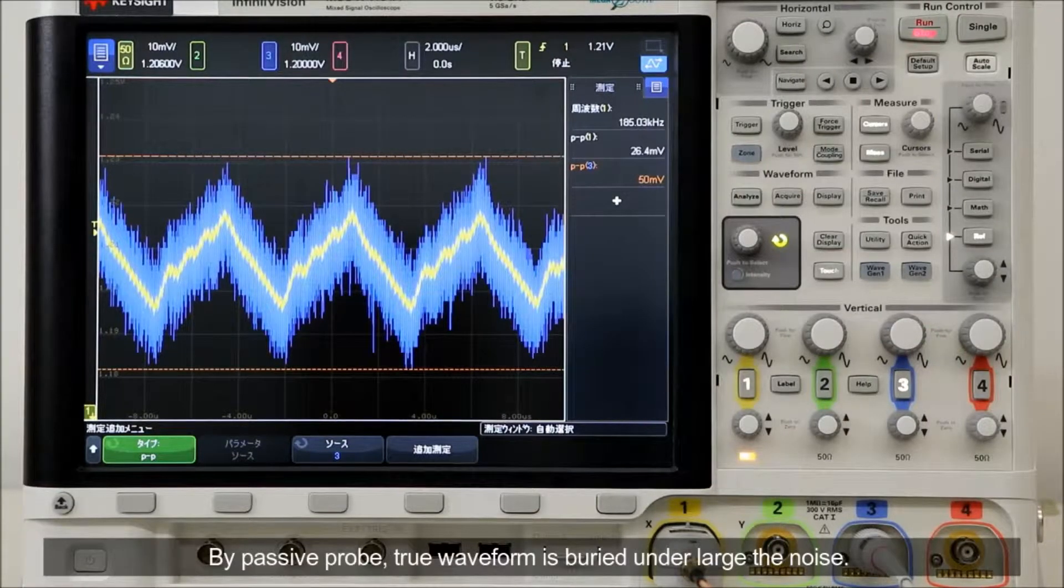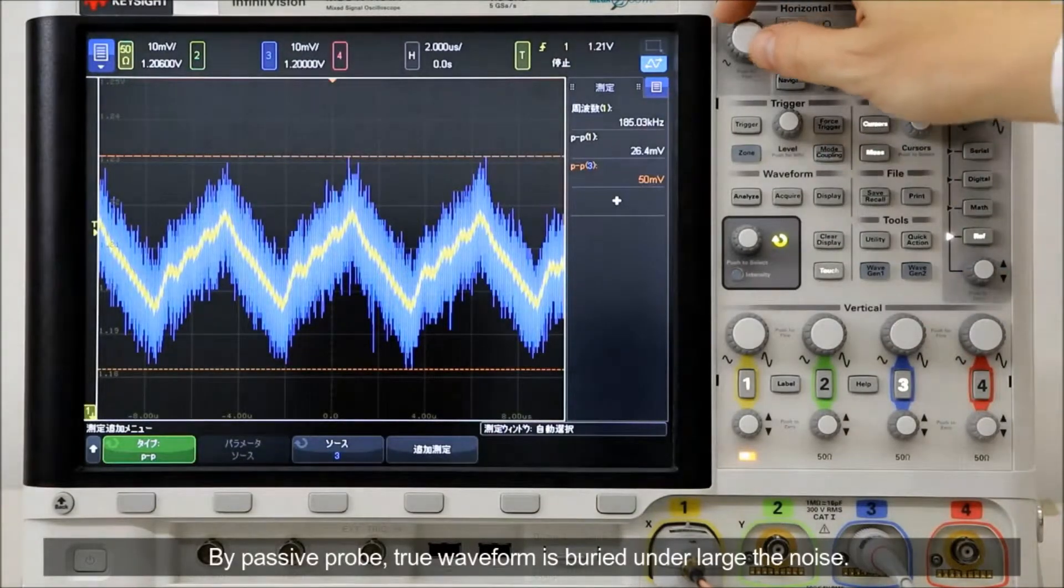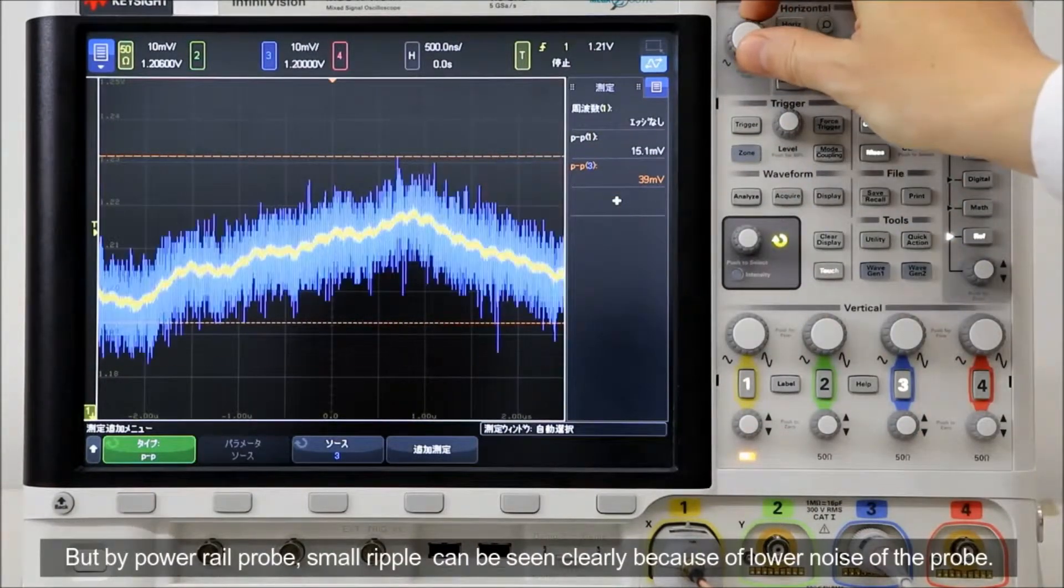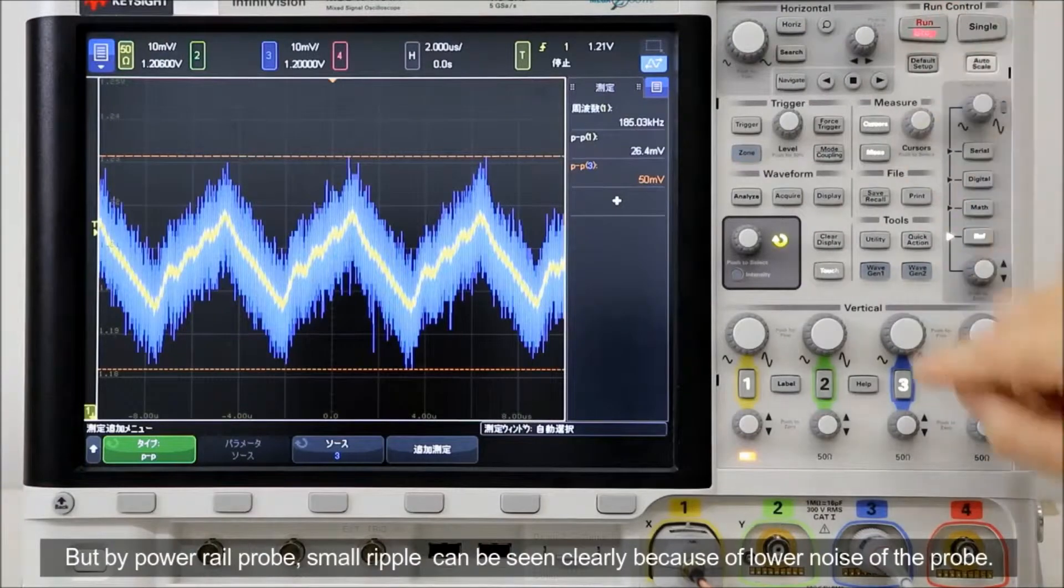By passive probe, true waveform is buried under the large noise. But by PowerRail probe, small ripple can be seen clearly because of the lower noise of the probe.